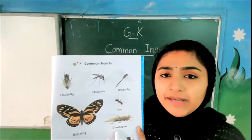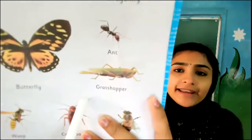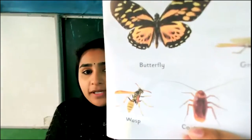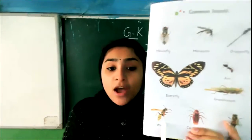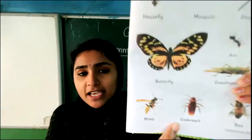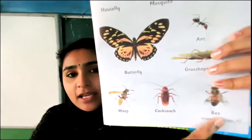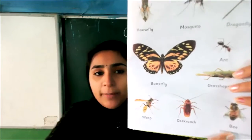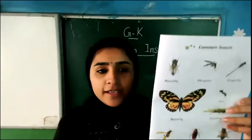Then grasshopper. What is this called? Grasshopper. This is called grasshopper. Then you can see here, wasp — W-A-S-P, wasp. Then cockroach. Here you can see the picture of cockroach. Then at last, bee — B-E-E. This is honeybee.